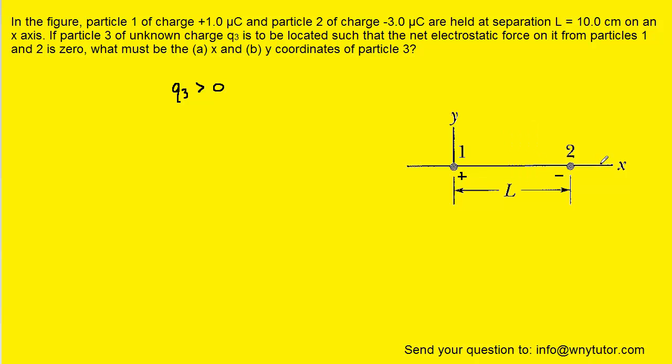We might therefore think that we can place the charge on the right side of charge 2. Now because charge 2 is negative, it would again exert an attractive force, but this time that would be pulling charge 3 to the left. Charge 1 is positive and therefore it would be repelling charge 3, pushing it away and to the right.